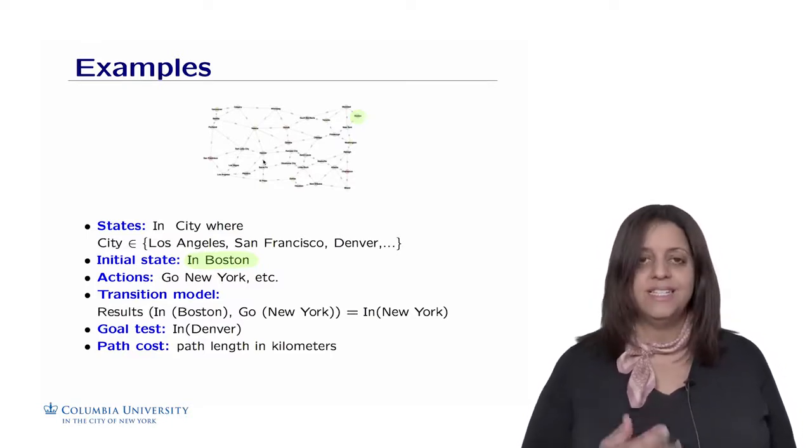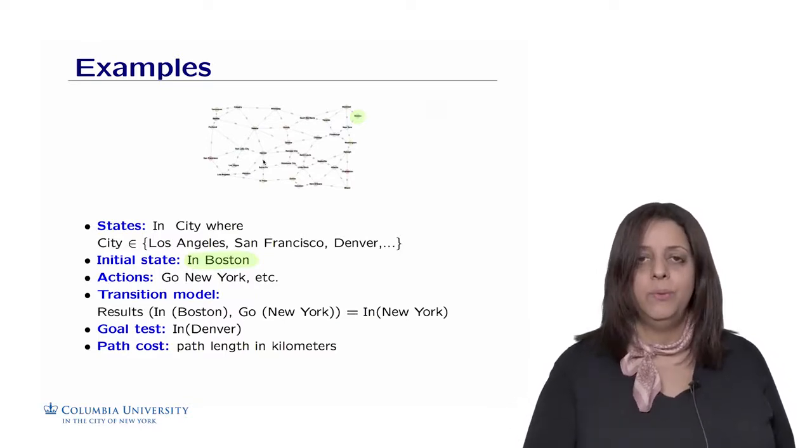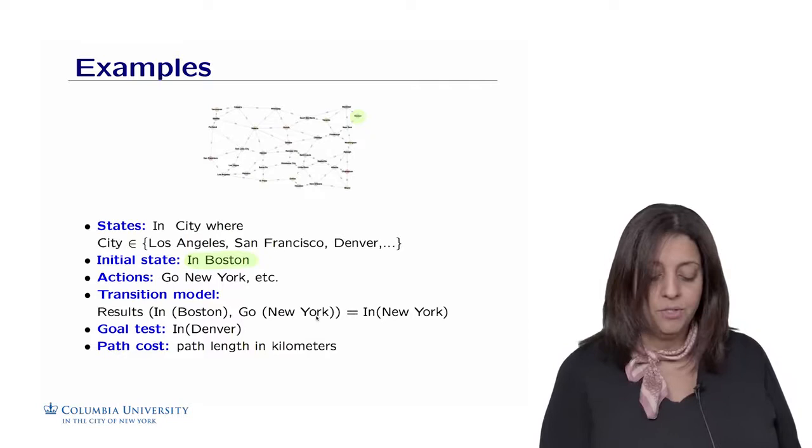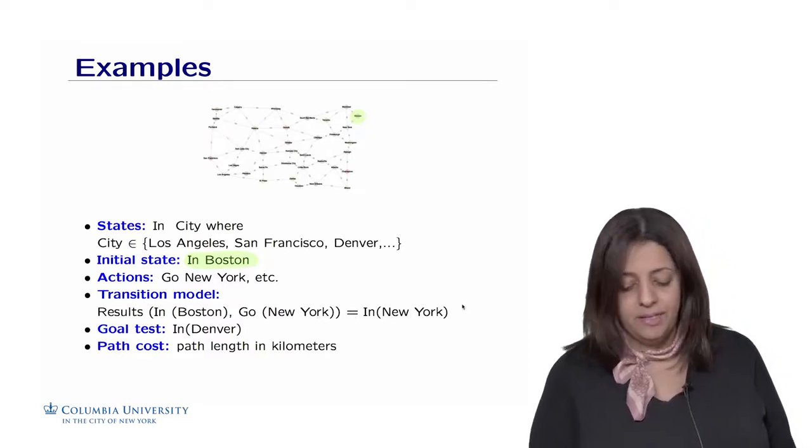Transition model tells us if we are in a city and we go to another one, where we end up. So for example, the result of being in Boston and going in New York brings us to being in New York, okay?